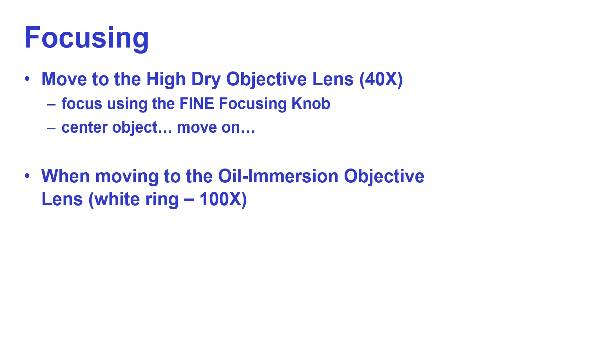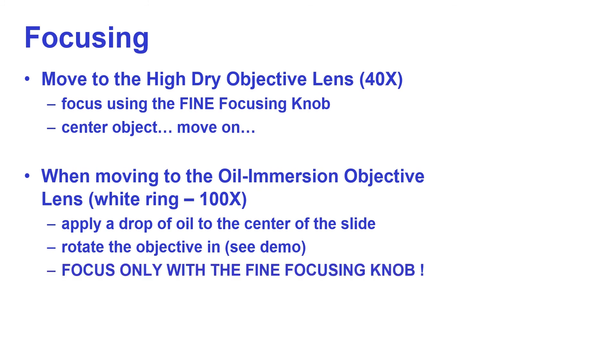When we move to the oil immersion lens, that has the white ring in it, we apply a drop of oil to the center of the stage. Watch the video it tells you how to do this. You rotate the objective in and you focus only with the fine focusing knob. You don't have great distances to travel here.